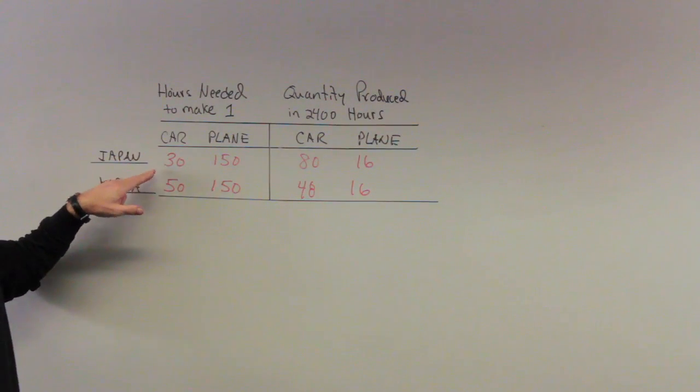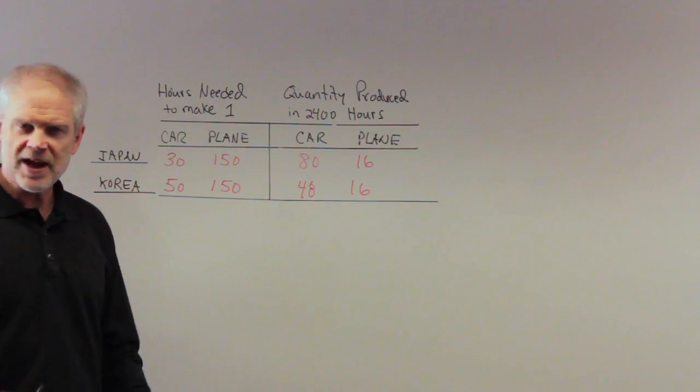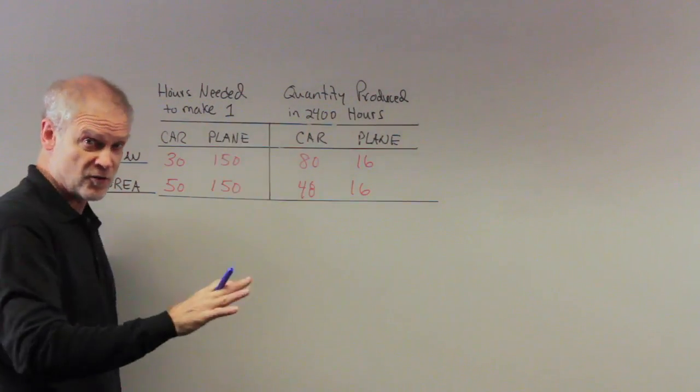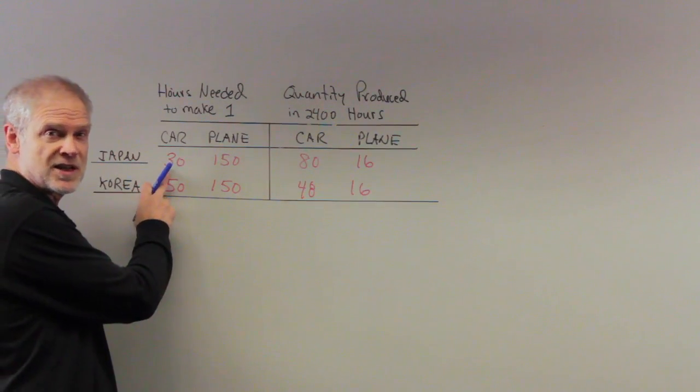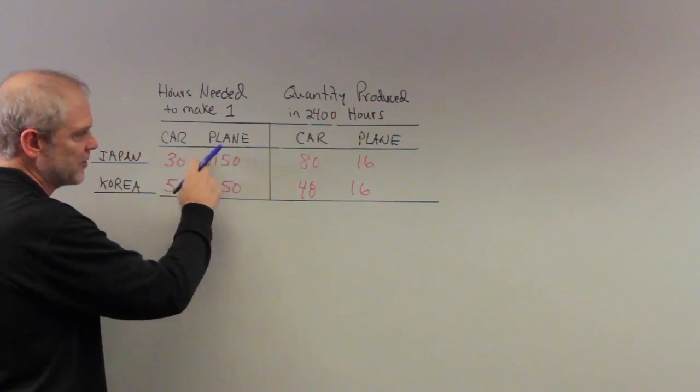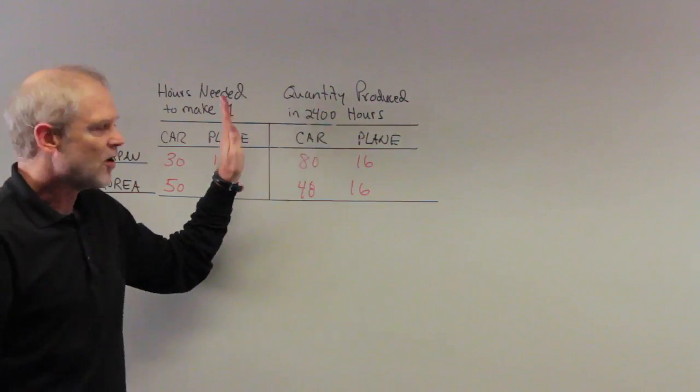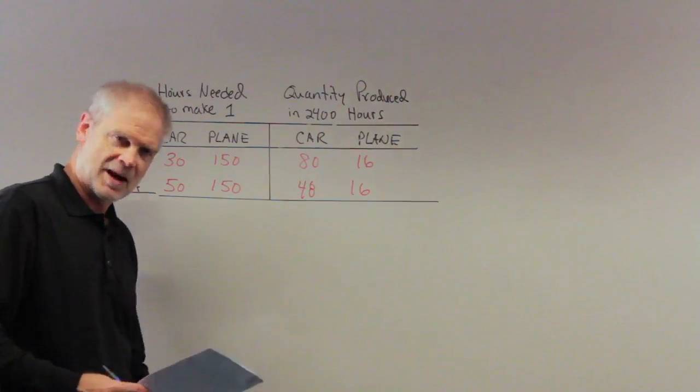So let's get oriented. Hours needed to make one car. So in Japan, they need 30 hours to make one car. If you have 2,400 hours in total, how many cars can you make? Well, you'll take the 2,400 hours that's available, if you put all your time to cars, you divide by the 30 hours necessary to make one car. 2,400 divided by 30 gives me 80 cars. So if Japan wants to, they can devote all their labor to producing cars and they can make 80 cars.